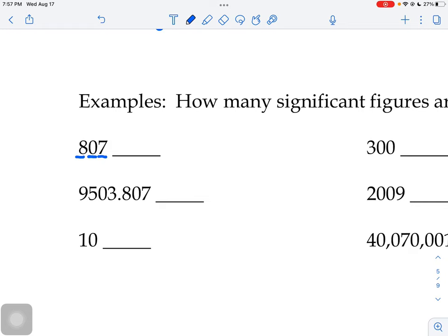If you look at the next example, anything that's not a zero counts, so the 9, 5, 3, 8, and 7 all count. Then this first zero is in a 5-3 sandwich so it counts, this zero at the end is in an 8-7 sandwich so it counts. That number has seven significant figures, all the numbers were measured.